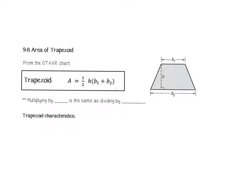Today we're going to be learning about area of trapezoids. The STAAR chart tells us that the area of a trapezoid is equal to one half the height times base one plus base two.